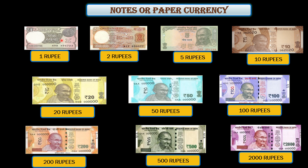This is a 1 rupee note. This is a picture of a 2 rupee note. This is a 5 rupee note. This is a 10 rupee note. This is a 20 rupee note. 50 rupee note. 100 rupee note. 200 rupee note. 500 rupee note. And 2000 rupee note.